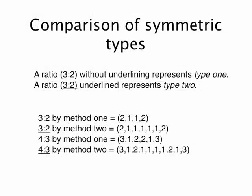But before we get on to those, let's just go back a step and look in detail at the two different symmetries that we've seen so far. You can see here that 3:2, as type 1, gives us the result 2, 1, 1, 2. 3:2 underlined, which is the type 2, gives us a longer pattern. But all of the numbers are the same as the result of type 1. In other words, only 2s and 1s are used. If you compare the two kinds of 4:3 rhythm, you'll see that the same is true. There are no new or different numbers between the two types. Type 2 is simply longer than type 1.